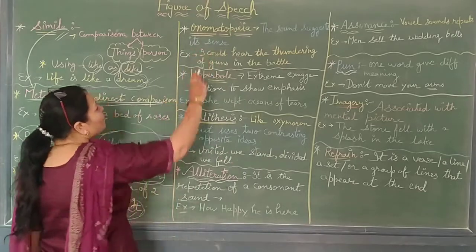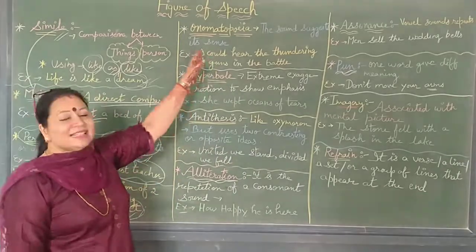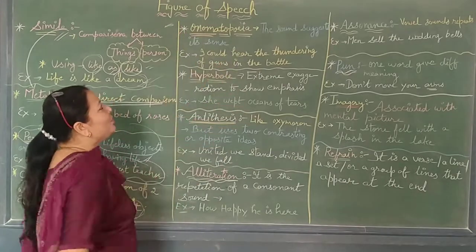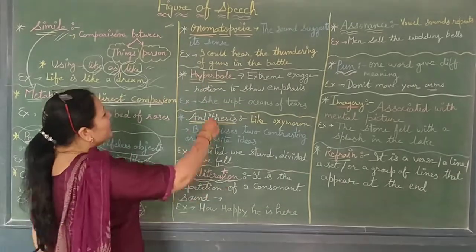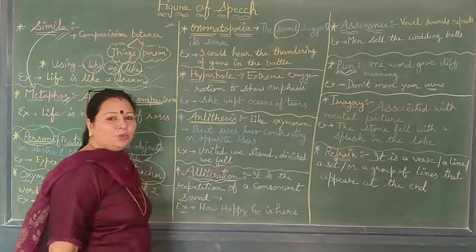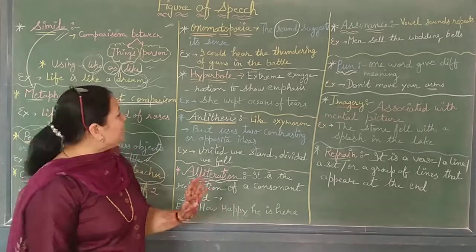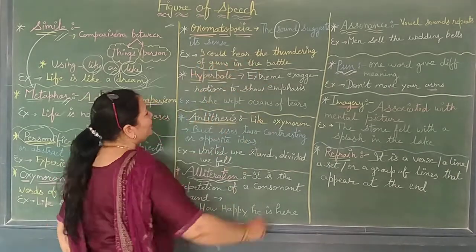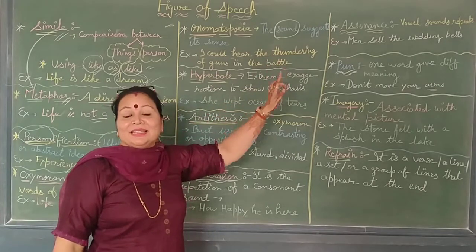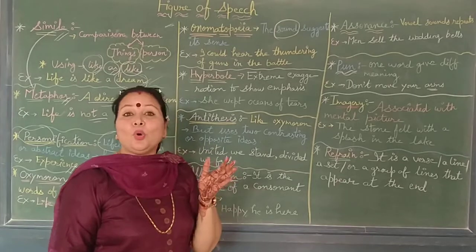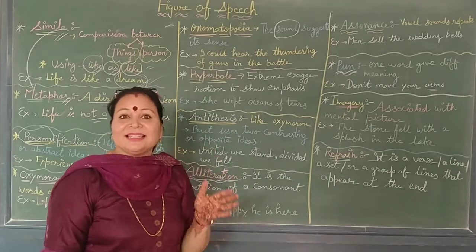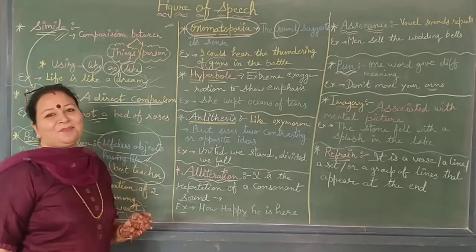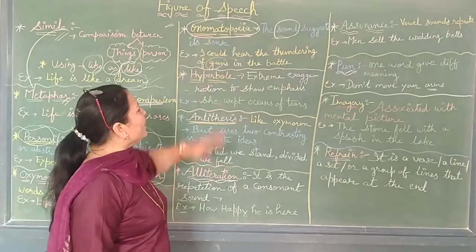The next figure of speech is onomatopoeia — that is, sound-suggested sense. Whenever a word imitates or suggests a natural sound, that is onomatopoeia. For example, the chipping of birds, the hustle and bustle, or the thundering sound. 'I could hear the thundering of guns in the battle' — here the word 'thundering' suggests the sound of guns in war. Whenever you are talking about sounds, you are talking about onomatopoeia.